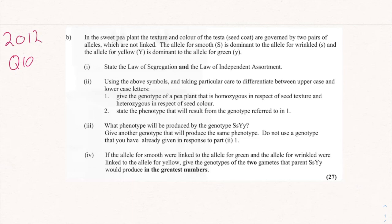That was 2018 question 13. Now let's move to 2012 question 10. We're given pea plants again, this time looking at color and texture. We're told the allele for smooth (capital S) is dominant to wrinkled, and the allele for yellow (capital Y) is dominant to green (lowercase y). The genes are not linked.